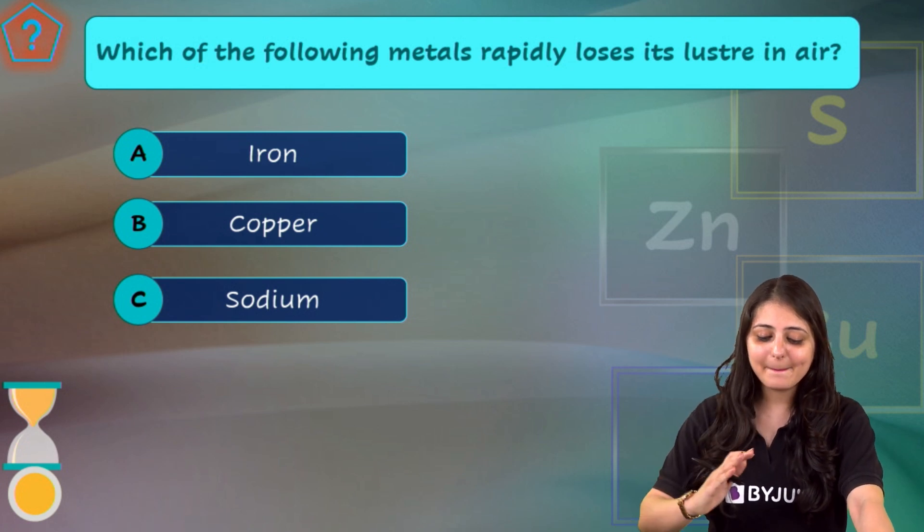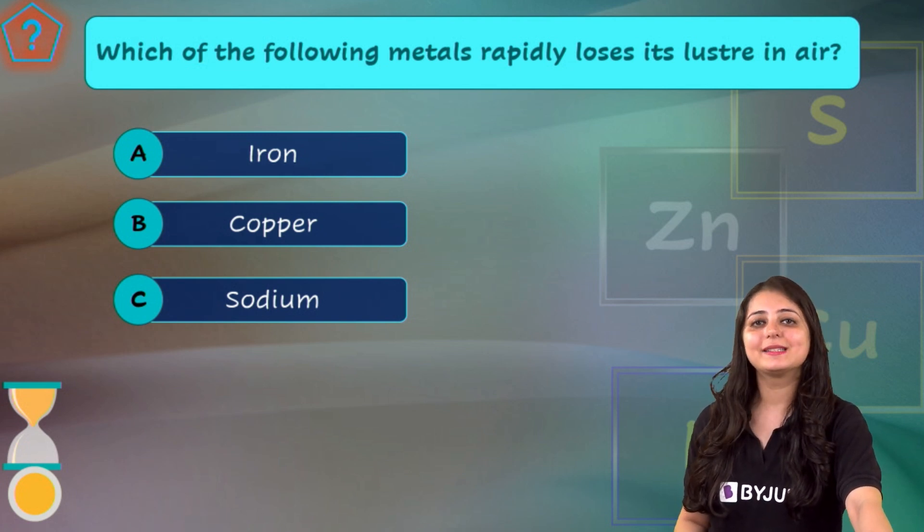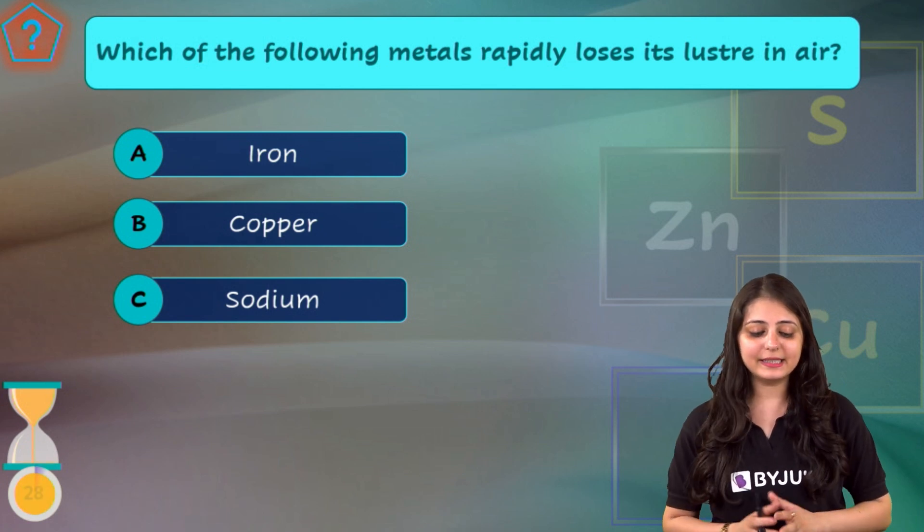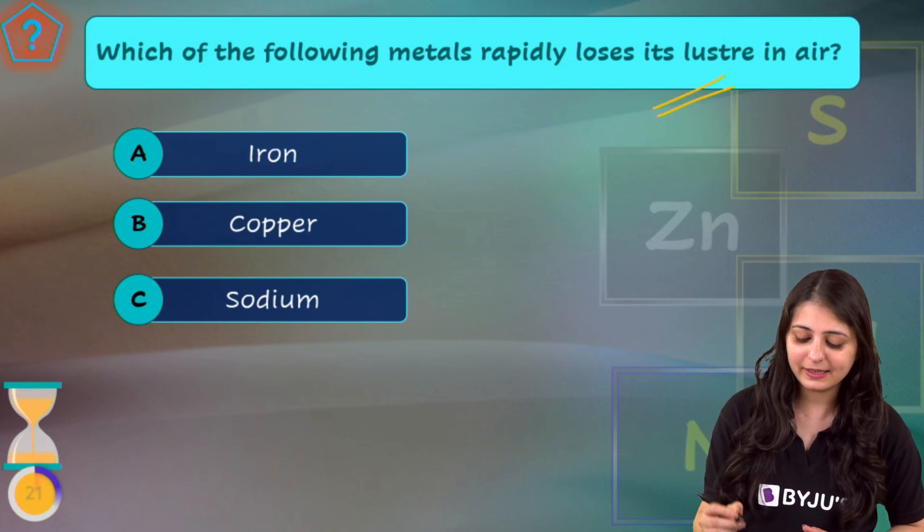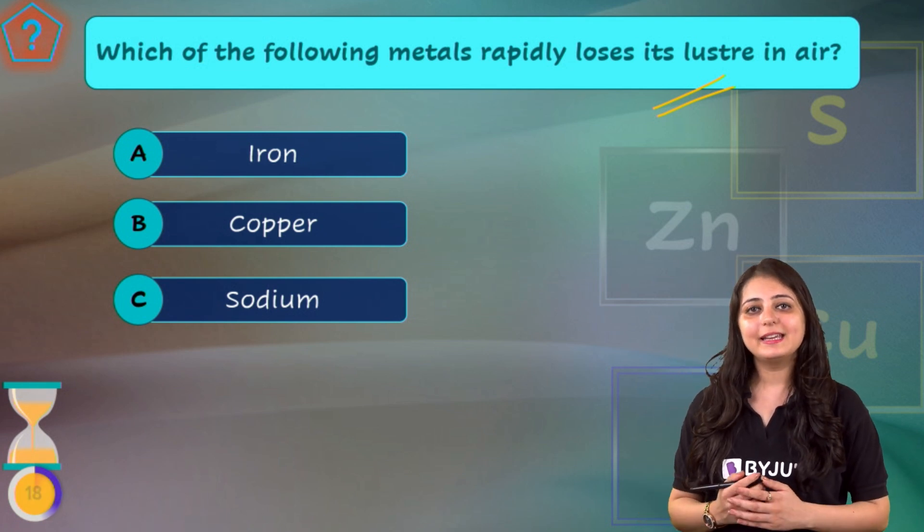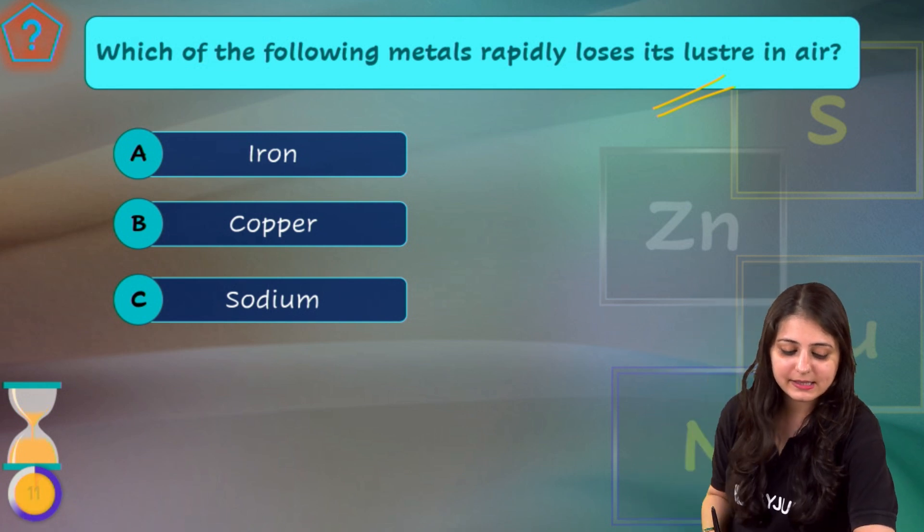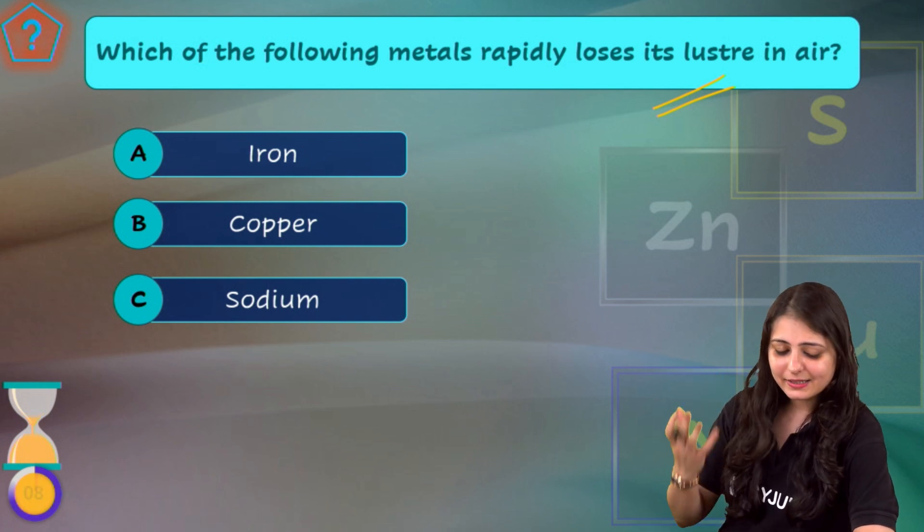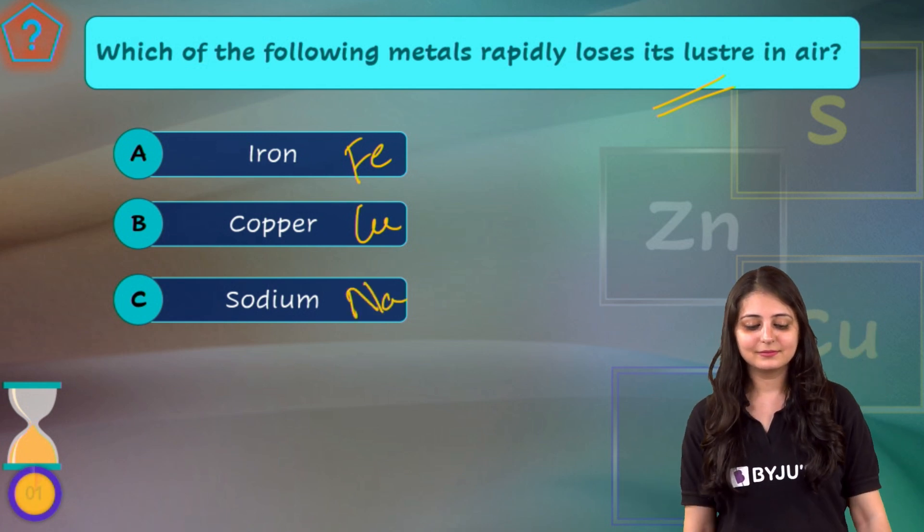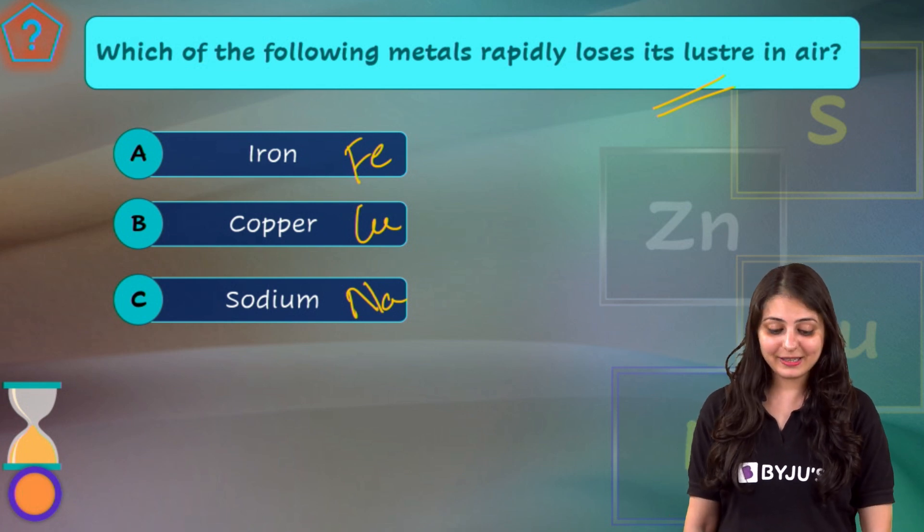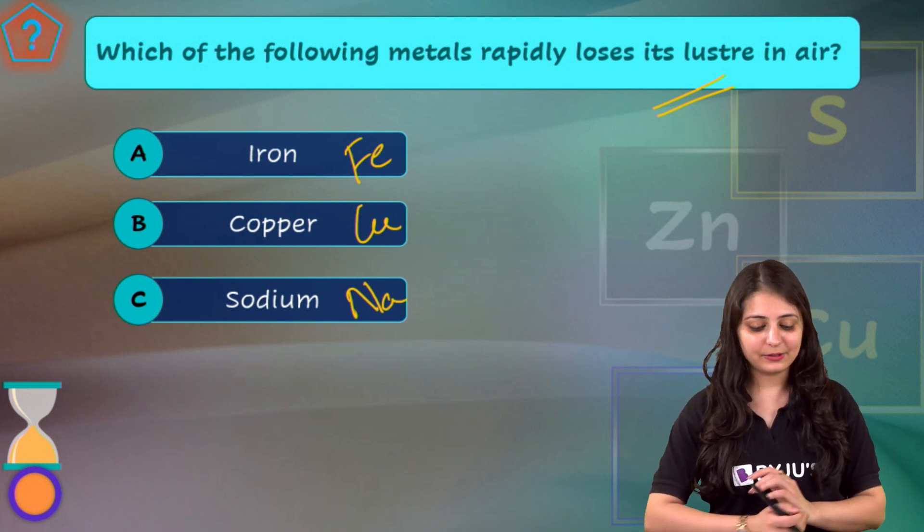Question number one: Which of the following metals rapidly loses its luster in air? Iron, copper, sodium. And your time starts now. So you have a good 30 seconds to answer this question. Which of the following metals rapidly loses its luster? Which metal is this? Is it iron? Is it copper? Is it sodium? What I can do is, meanwhile I can tell you the symbols. So iron is Fe, copper is Cu, sodium is Na. Iron is not I - I is iodine. Copper is not C - C is carbon. Sodium is not S - S is sulphur. So I thought let me also tell you the symbols alongside.